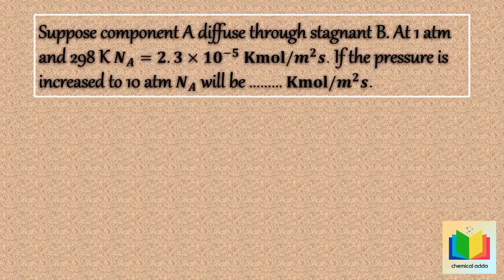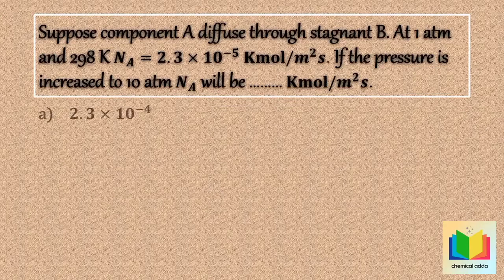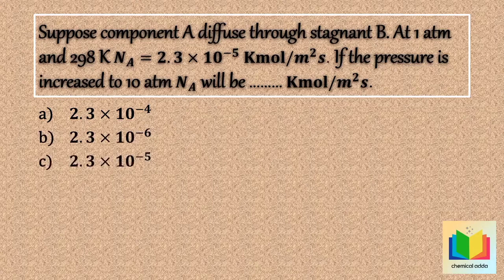Question 1: Suppose component A diffuses through stagnant B at 1 atmosphere and 298 Kelvin. Na is equal to 2.3 × 10⁻⁵ kilomole per meter square second. If the pressure is increased to 10 atmospheres, Na will be — kilomole per meter square second. Options: (a) 2.3 × 10⁻⁴, (b) 2.3 × 10⁻⁶, (c) 2.3 × 10⁻⁵, (d) 1.7 × 10⁻⁵.